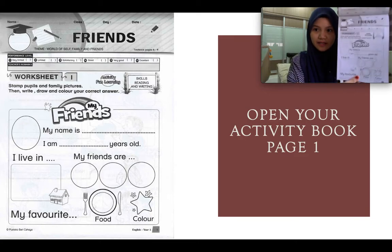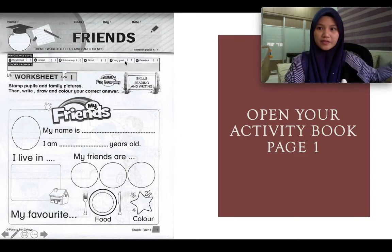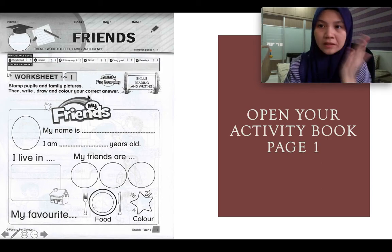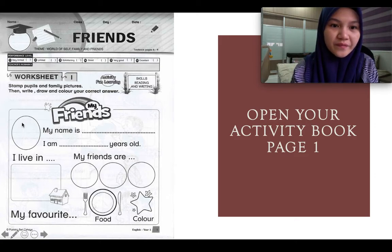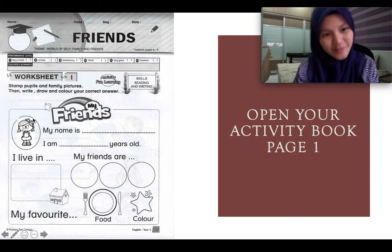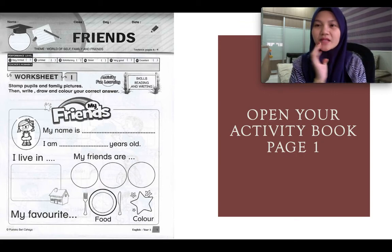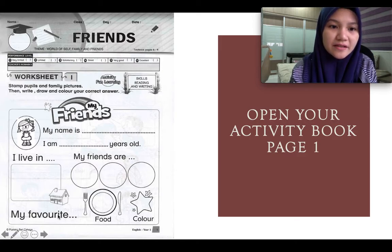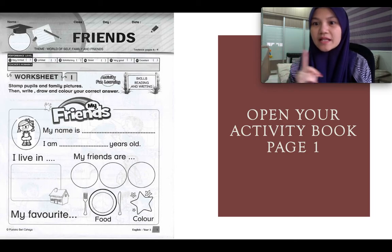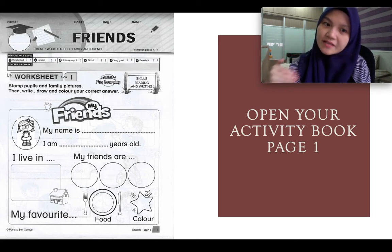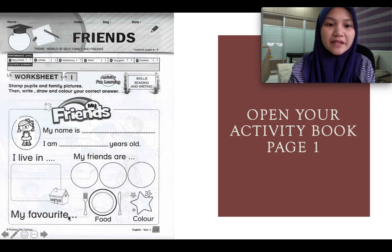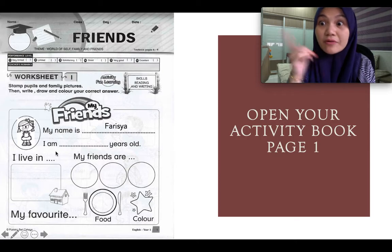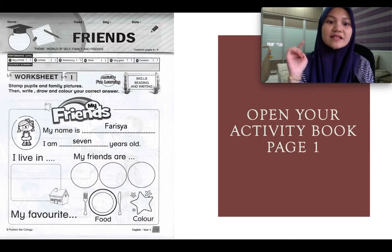You can see the exercises on this page. Firstly, you need to draw yourself here — for example, a cute little girl. Next, write 'My name is' — based on the previous lesson, you know how to say 'My name is,' 'I am,' and how old you are. For example, my name is Farisha. I am seven years old.